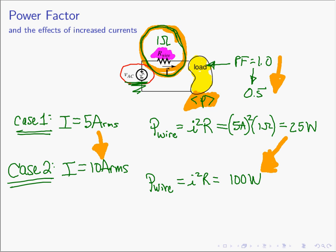The reason this becomes a problem is how you get charged for energy. There is an energy meter that measures kilowatt hours, and the meter is attached right at your load—on the outside of your house where the electric utility enters, or at your factory. When the utility measures the energy used by your load, they are measuring it right there at the load. The energy lost in the wire—that 25 watts or 100 watts—has already been lost, and all the electric utility sees is the one kilowatt being absorbed by your load.